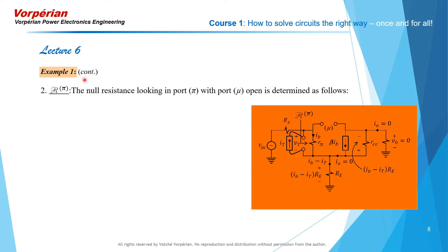Next we determine the null resistance looking into port pi with port mu in its reference state (open circuit). We again connect a test current source I_T and determine V_T, while I_T and V_in together null V_out. When V_out is nulled, the output current is nulled and beta·I_B flows entirely through R_CE, since there is no current in the other branch.